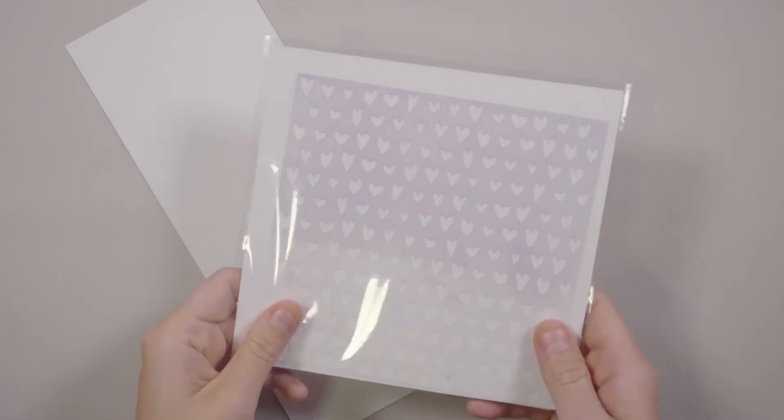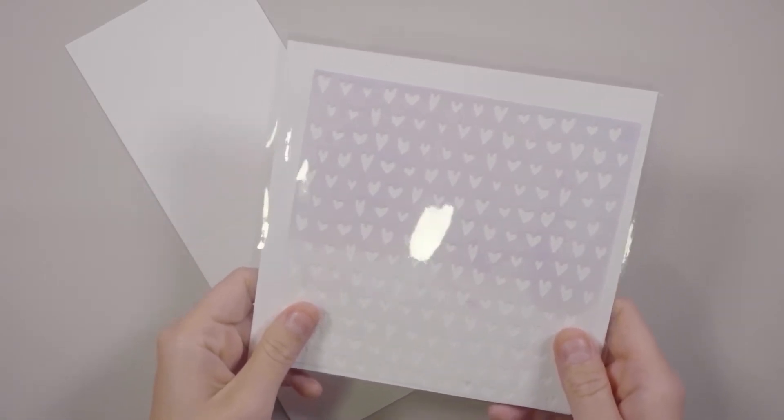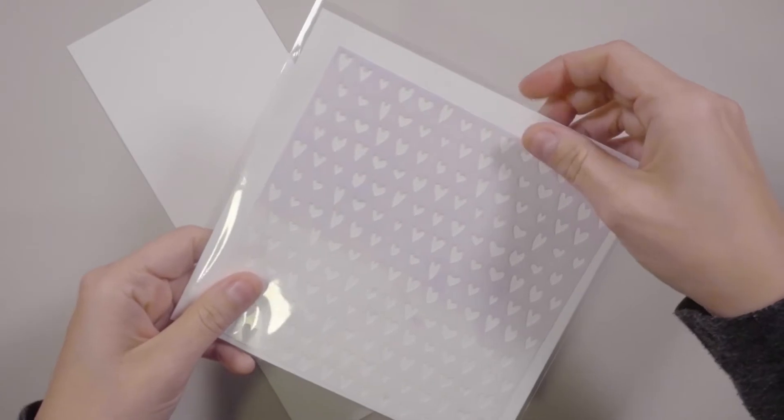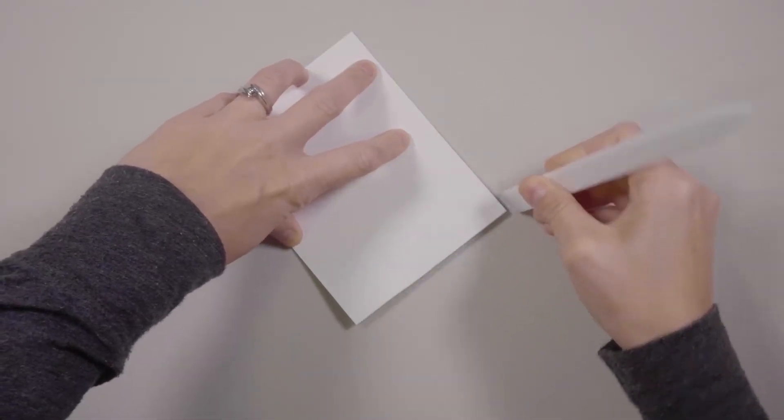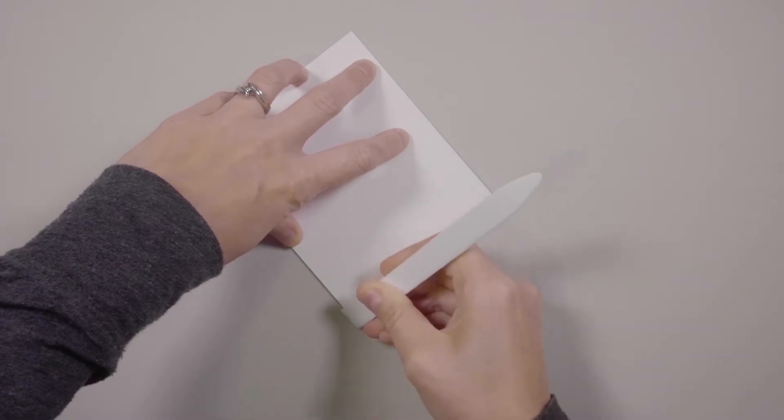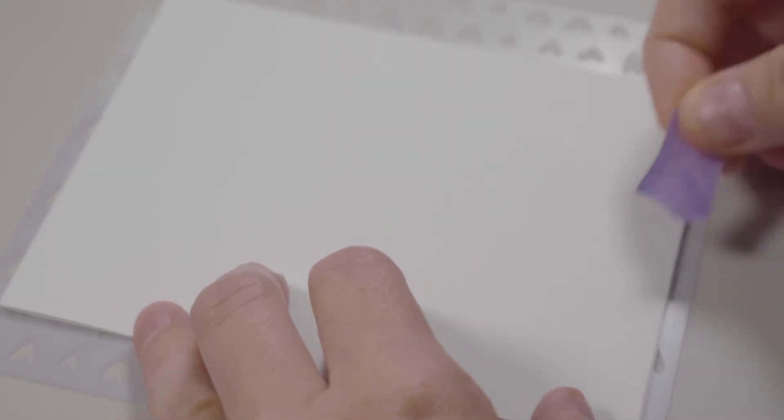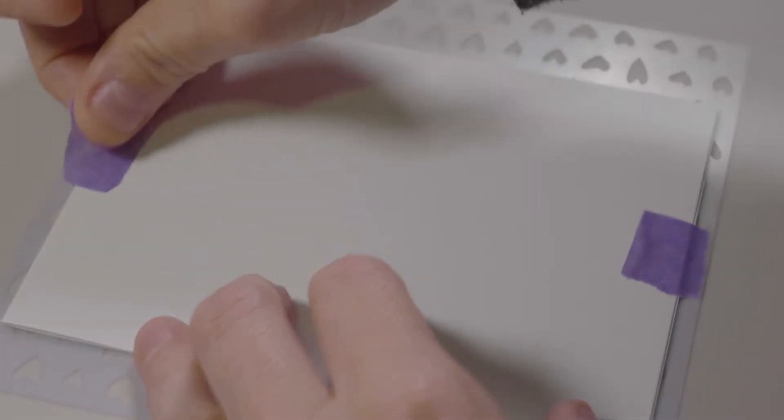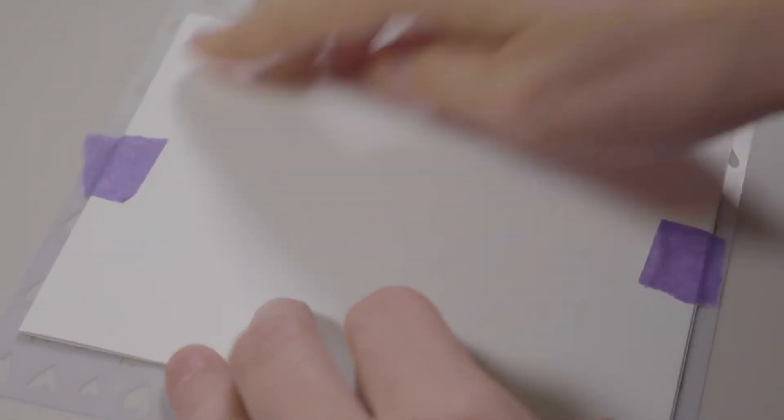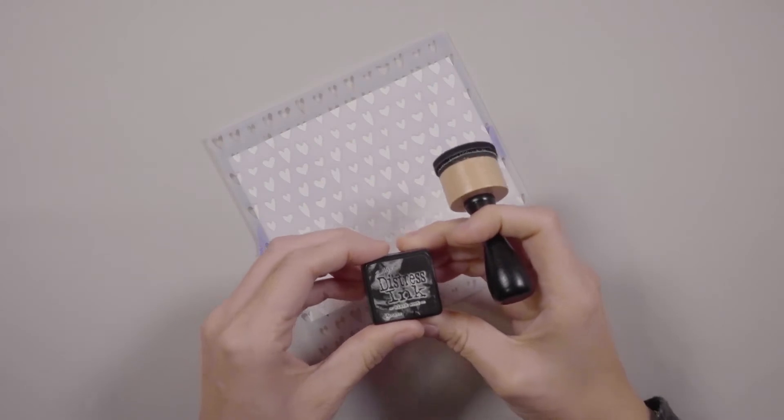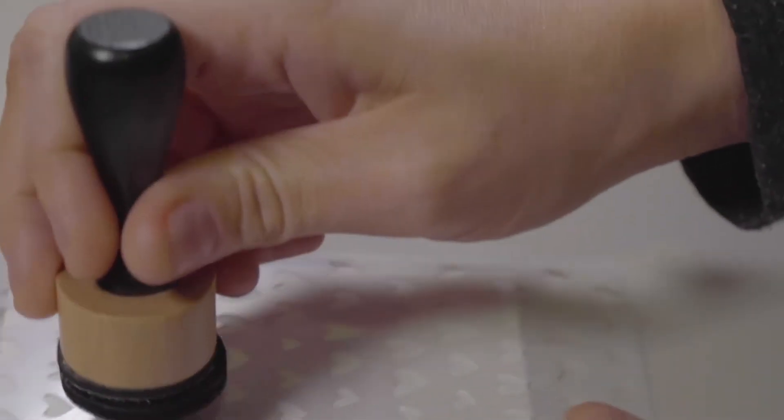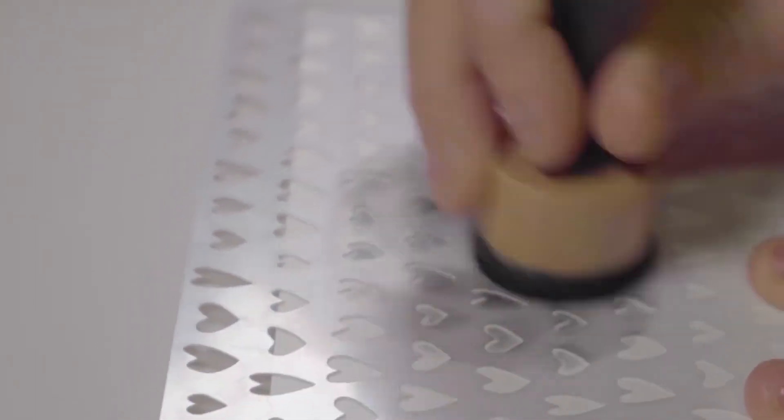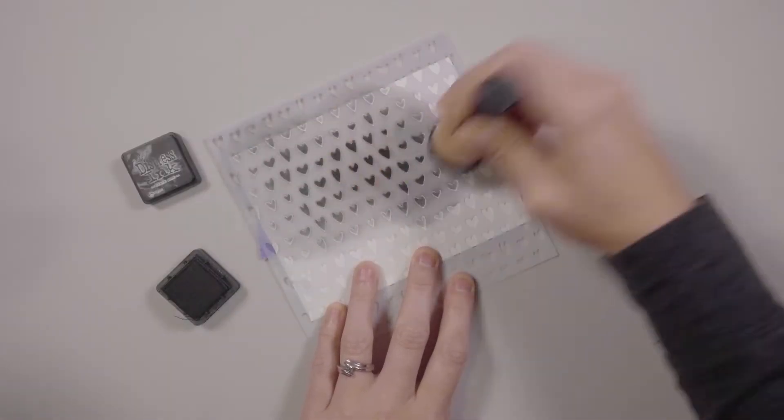Let's start this card off with the background. I will be using this Simon Says Stamp Drawn Heart Stencil to blend directly onto the card base. I've scored and folded my card base. It's a four and a quarter by five and a half inch card. And I am getting it taped onto the back of that stencil so that I will be set to ink blend.